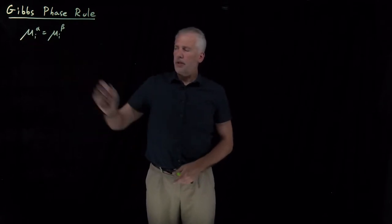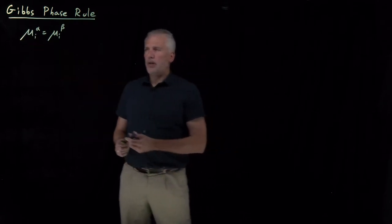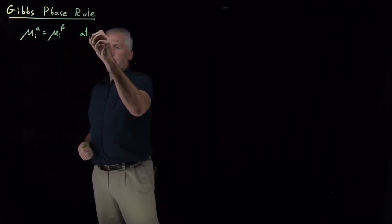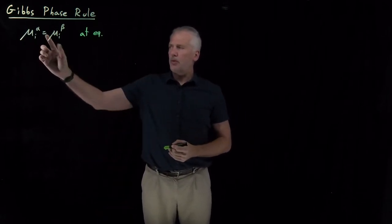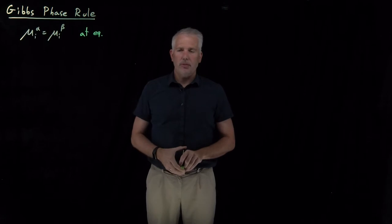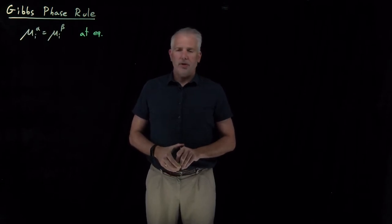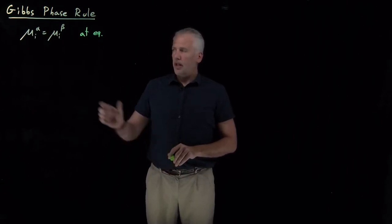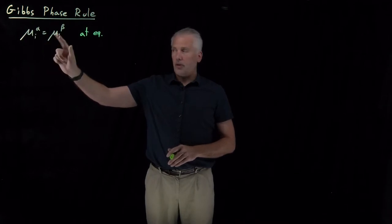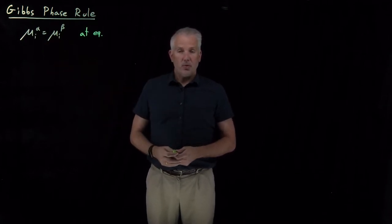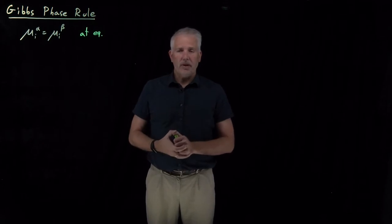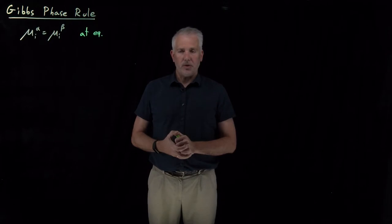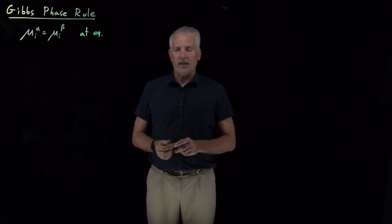This requirement that when a system is at equilibrium, the chemical potential of each component is equal in each of the phases that is in equilibrium, turns out to be useful not just for helping us describe where coexistence lines will be on a phase diagram, but also places constraints on the number of thermodynamic degrees of freedom we can specify at the same time.